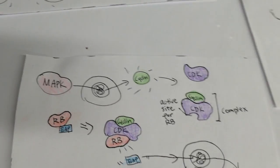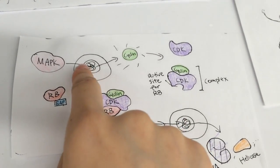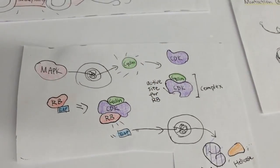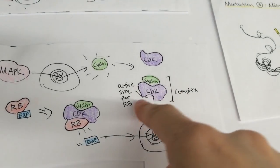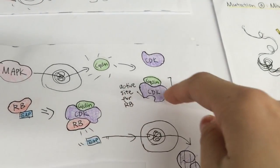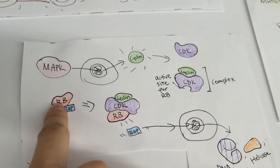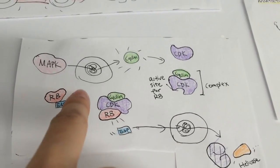MAPK is the transcription factor for cyclin, which means that it enters the nucleus of the cell, locates and promotes the genes specifically in charge of producing cyclin to actually produce cyclin. Cyclin binds to CDK to form a complex that opens the active site on CDK for RB. RB is a tumor suppressor gene protein that binds to E2F. When RB binds to CDK, it releases E2F.